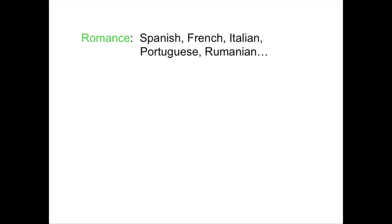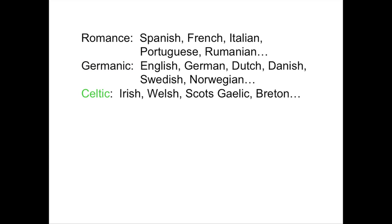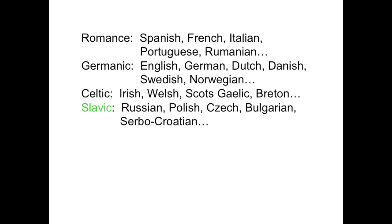We have the Romance language family and others you've heard of: the Germanic language family, including English, German, Dutch, etc.; the Celtic language family, Irish, Welsh, and some others; Slavic — what does it mean to be a Slav? It means that you speak a Slavic language, like Russian or Serbo-Croatian.